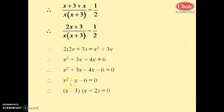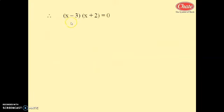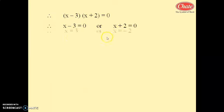Factoring x squared minus x minus 6: we need factors of 6 whose algebraic sum is minus 1. The factors are minus 3 and plus 2, since minus 3 plus 2 equals minus 1. So (x minus 3)(x plus 2) equals 0, giving x minus 3 equals 0 or x plus 2 equals 0, therefore x equals 3 or x equals minus 2.